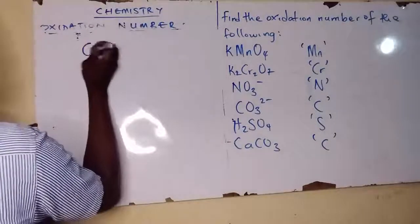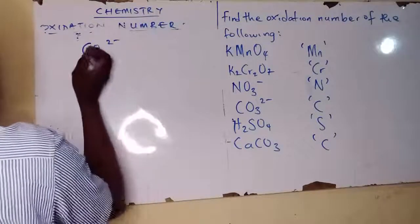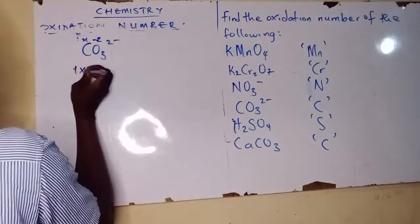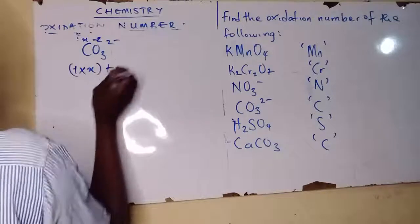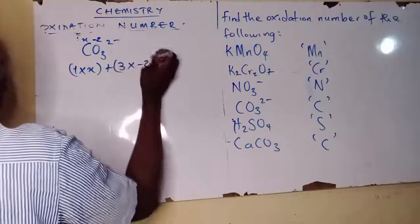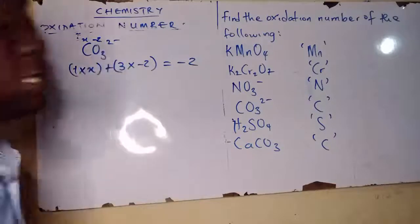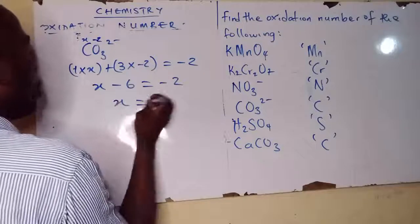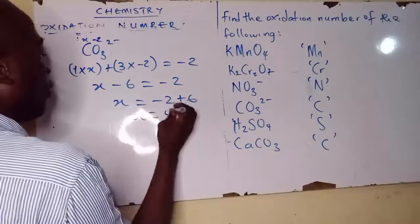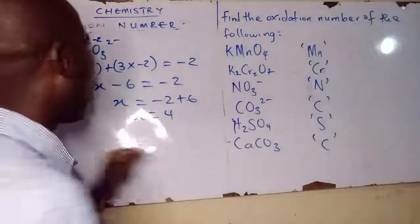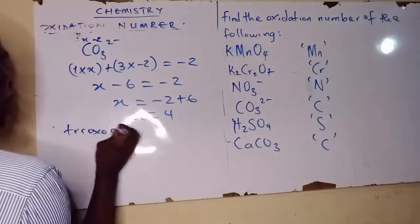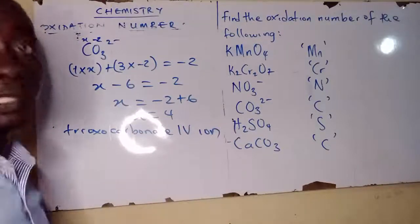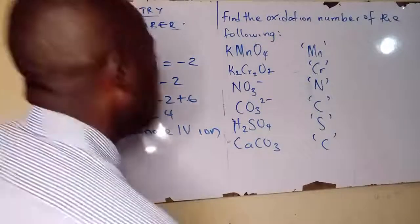CO3 2 minus. Now, CO3: 1 times x plus 3 times minus 2. Everything equals to minus 2, the charge on it. So x minus 6 equals to minus 2. X is equal to minus 2 plus 6, x is equal to 4. So carbon in the carbonate is 4.